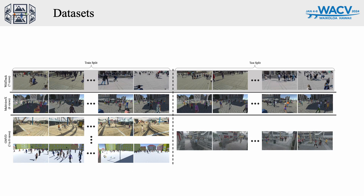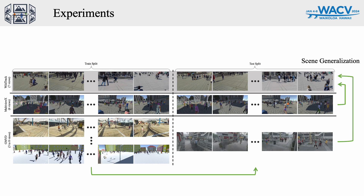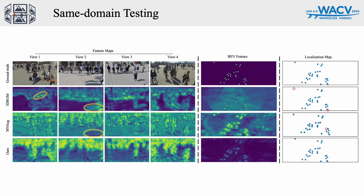We perform our experiments on three multi-view datasets, one being a real-world dataset and the other two being synthetic datasets. We perform two experiments: same domain testing, which trains and tests on the same scene, and scene generalization testing, which trains on one scene and tests on a different scene with different camera setups. Our model outperforms previous methods both in real and synthetic datasets, especially in terms of MODA and recall scores. These qualitative results highlight our model's capability to detect accurately with a clear focus on foreground information and more concise feature representation on the bird's-eye-view plane.